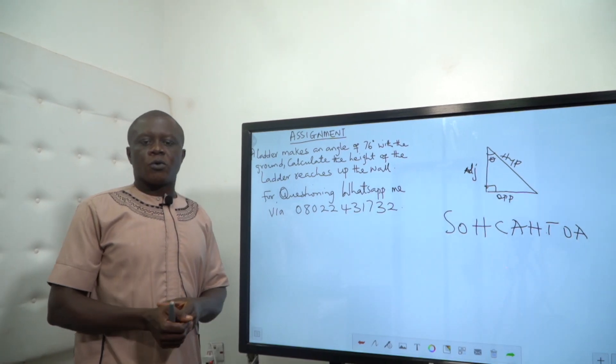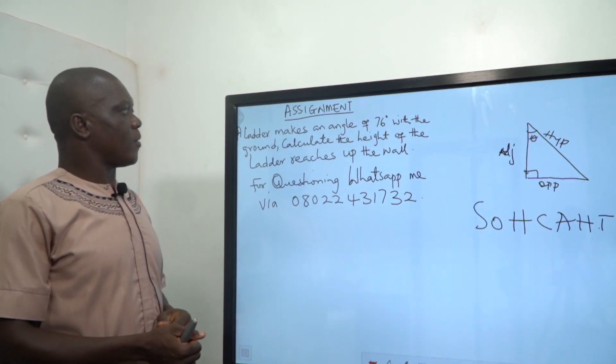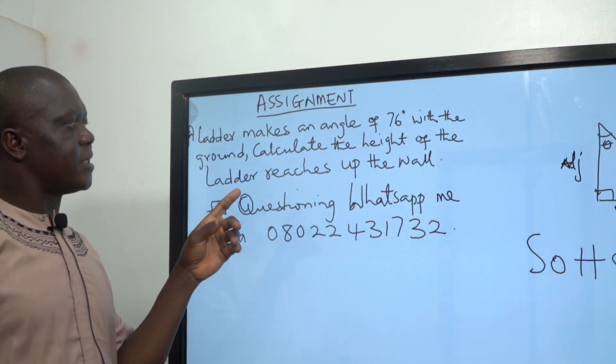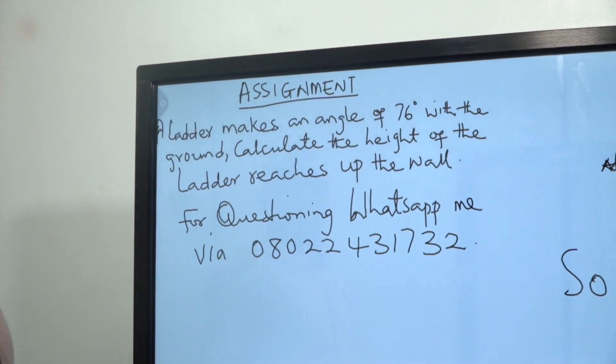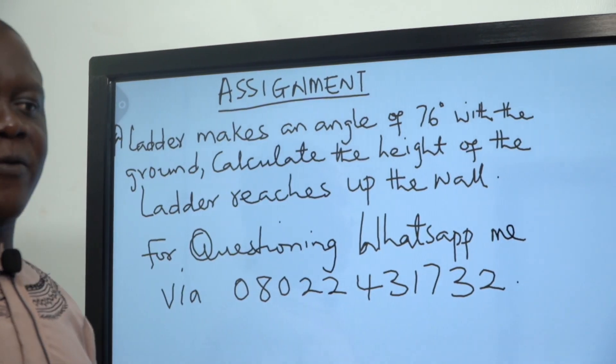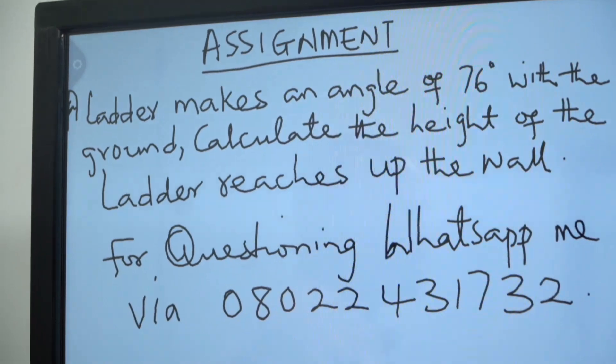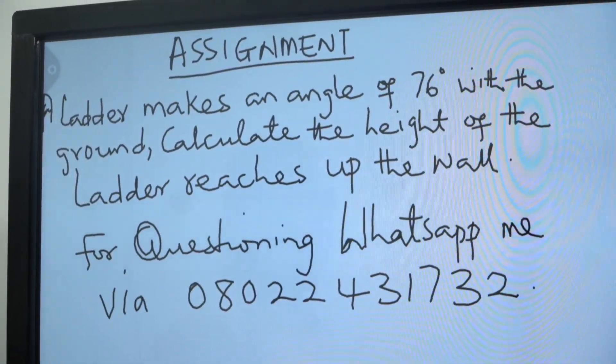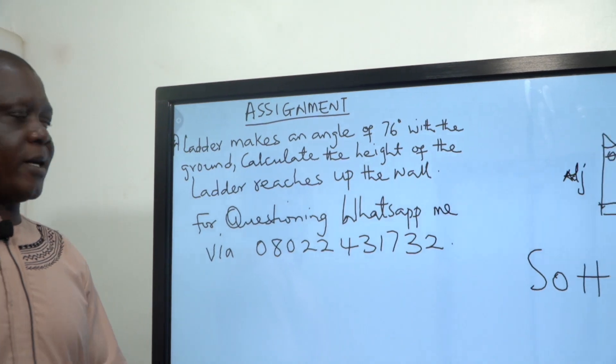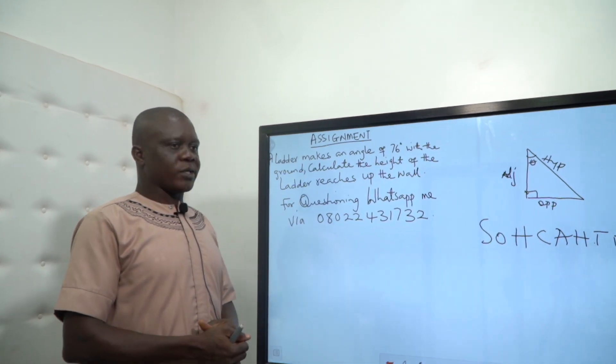Then I want you to try this. A ladder makes an angle of 76 degrees with the ground. Calculate the height the ladder reaches up the wall. If you follow what I have just explained, here now the angle is given, the size is not given. So it is now left for you to know whether it is the line of sight or the level ground that is required. And if you use the appropriate trigonometry, that is if it is sine you use sine, if it is cosine you use cosine, if it is tangent you use tangent, you can be able to resolve the problem.